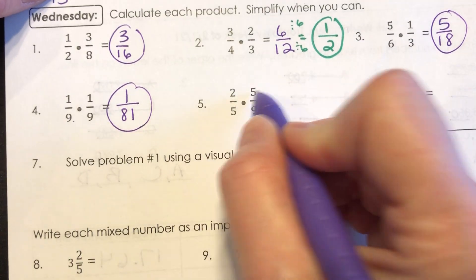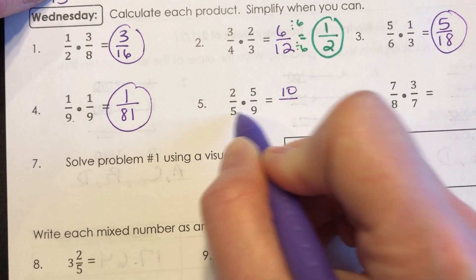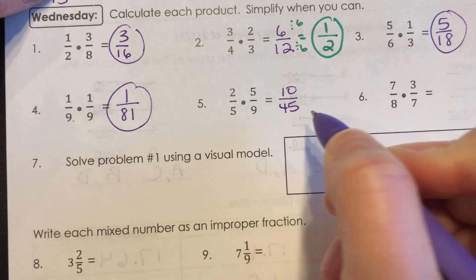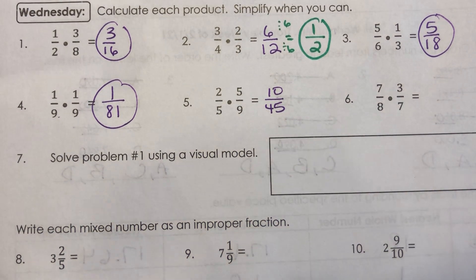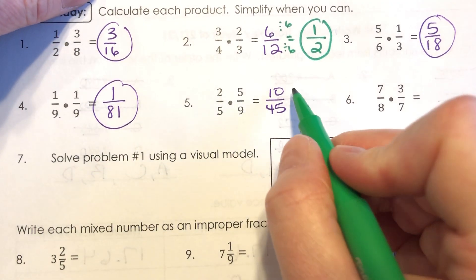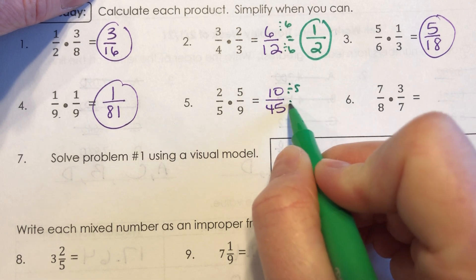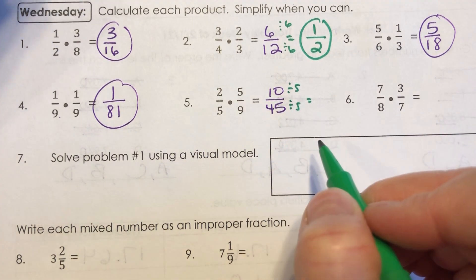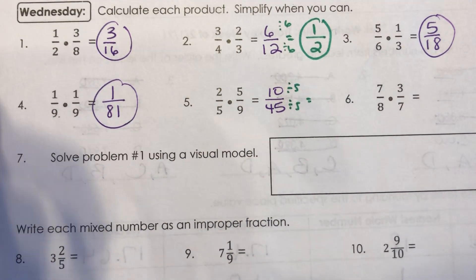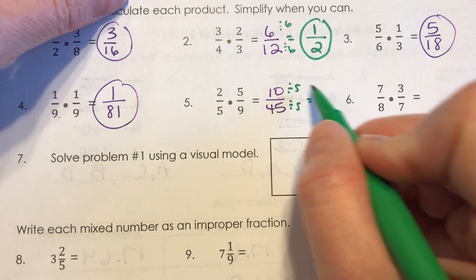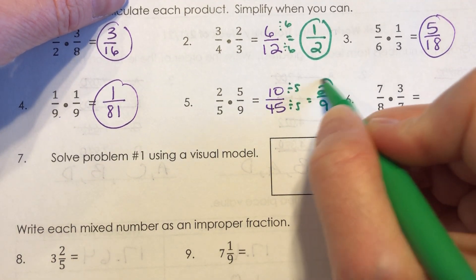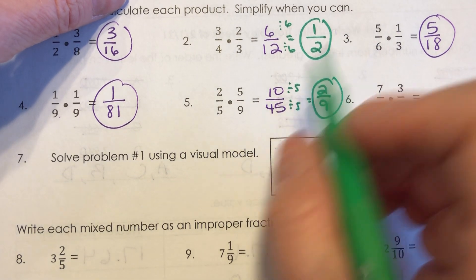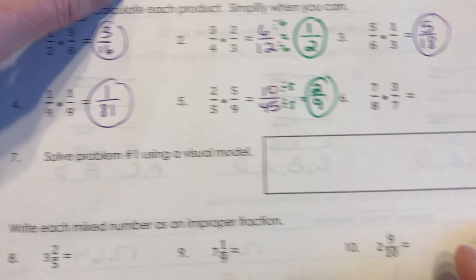Number 5, 2 times 5 is 10, and 5 times 9 is 45. And right away, I see that this ends in 0 and this ends in 5, so I know that 5 goes into both of those. I'm going to divide both the numerator and the denominator by the same amount because that creates an equivalent fraction. It just makes a simpler one. 10 divided by 5 is 2, and 45 divided by 5 is 9. So 2 ninths is what you should have. Don't leave it as 10 45ths. Switch it to 2 ninths.